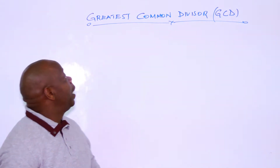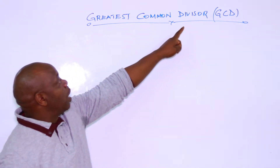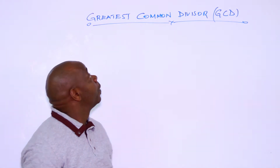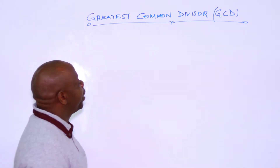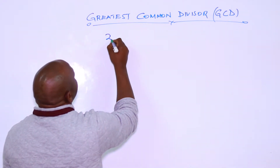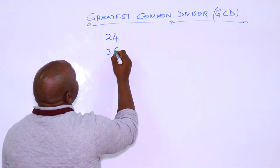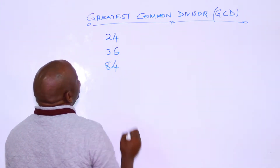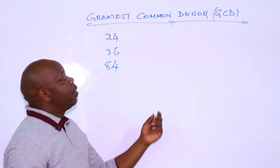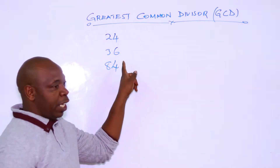Our topic today is the greatest common divisor, or the GCD. Consider the three terms: 24, 36, and 84. We want to get the GCD of 24, 36, and 84.